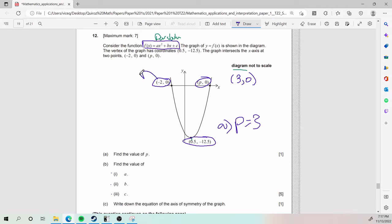I'm going to plug in the first one here. We end up with 0 equals a times negative 2 squared plus b times negative 2 plus c. So that's going to give me 0 equals 4a minus 2b plus c.